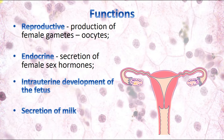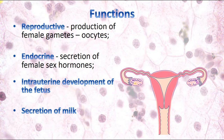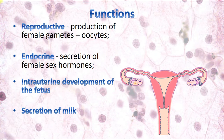The second shared function is the endocrine function — secretion of sex hormones. In females, the ovaries secrete estrogens and progesterone. In males, the testes produce androgens, specifically testosterone. Two functions unique to the female reproductive system are intrauterine development of the fetus, provided by the uterus, and secretion of milk, provided by the mammary glands for the nutrition of the baby after delivery.